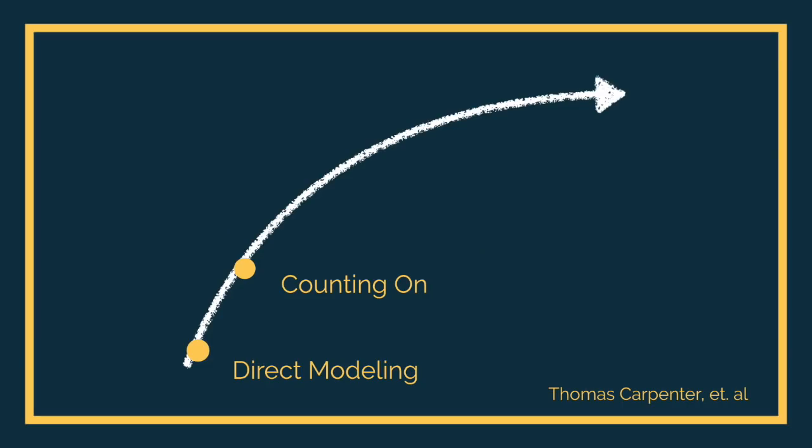As they start to progress with their understanding of numbers, they get to a phase known as counting, where they will hold one of those numbers in their head and then count on to get to the answer. Typically they hold the first number because they're modeling that situation — he had three and then he got four more — so they would count four more to figure out how much it is.